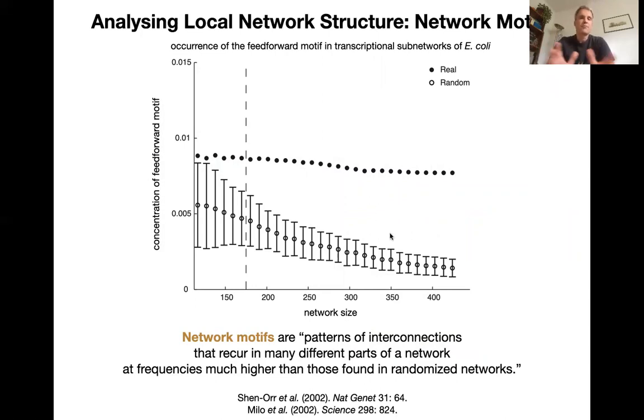But let's look at what they did is they subsampled the transcriptional network of E. coli. So they took different sections of it, set networks from it with increasing size. And they looked how many times does this feed forward motive occur compared to what they would expect. And so down here with the error bars is a series of measurements in these randomized sets. And as the network grows bigger, you can see that you would expect less and less frequent occurrences of this feed forward motive. And also, the error gets smaller as your sample size increases. On the other hand, the real occurrence of this particular motive stays more or less the same across all these networks.